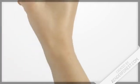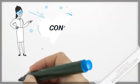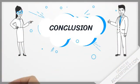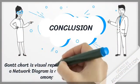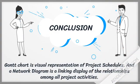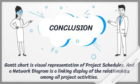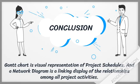As a conclusion, a Gantt chart is a visual representation of a project schedule. You can use it to effectively manage project resources, time, and activities. For a network diagram, it is a linking display of the relationships among all project activities. That's all from me. Thank you.